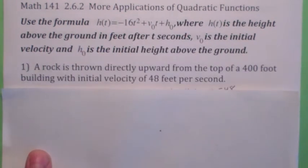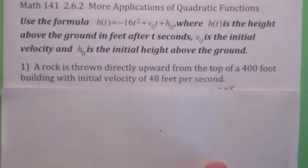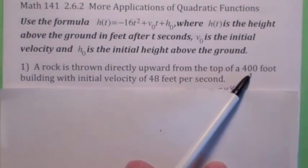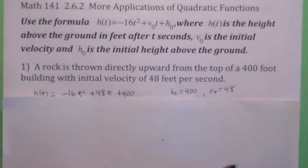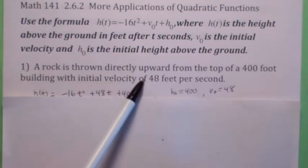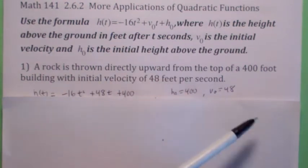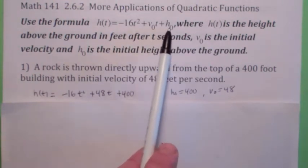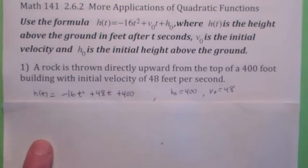Here we go. On this first one, they're telling you that a rock is thrown directly upward from on top of a 400-foot building. That's the initial height right there, that's h₀. h₀ is 400. And with initial velocity of 48 feet per second, so that's v₀. So all you have to do is go over to this equation and plug in 48 for v₀ and 400 for h₀.